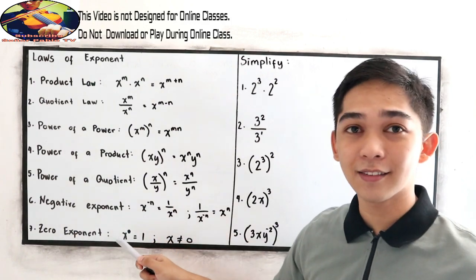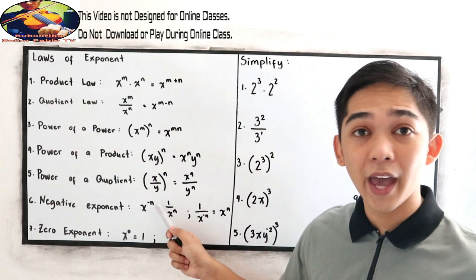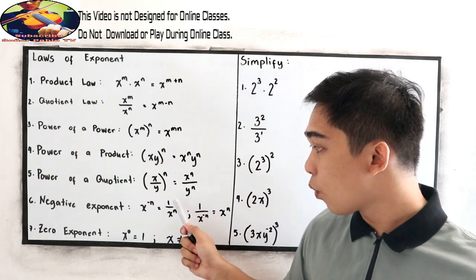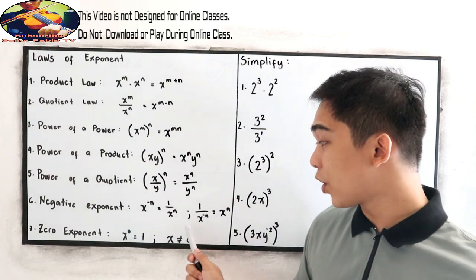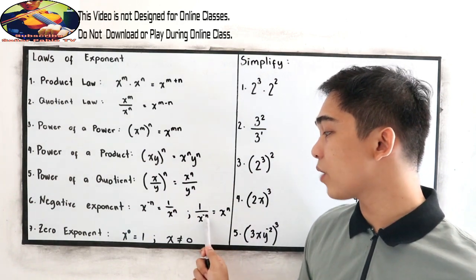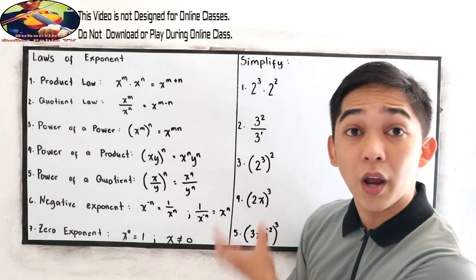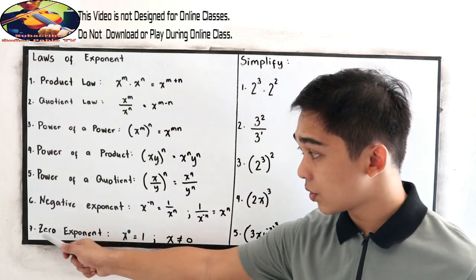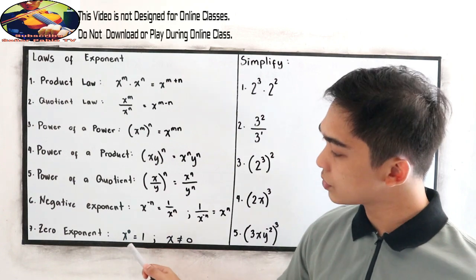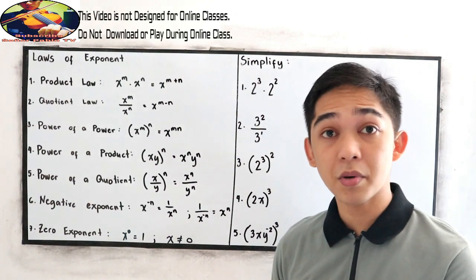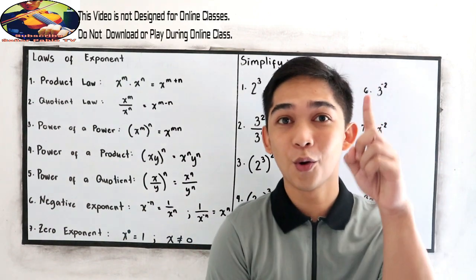The sixth law is the negative exponent: x raised to negative n equals 1 over x raised to n. Conversely, 1 over x raised to n equals x raised to n. The seventh is the zero exponent: x raised to 0 is equal to 1. Any number raised to 0, except for 0 itself, equals 1.